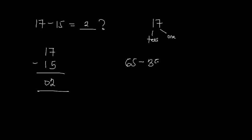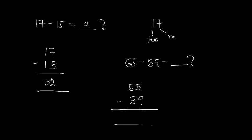Now let's have a look at another example: say we have 65 minus 39. The first thing we do is subtract the ones, which are 5 and 9. Now we have 5 minus 9 — we cannot subtract 9 from 5 because 5 is smaller and 9 is bigger. So what do we do? We borrow.